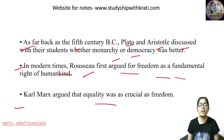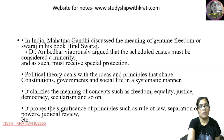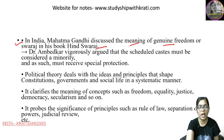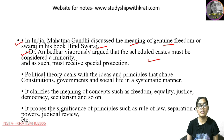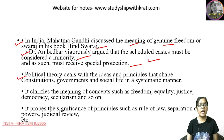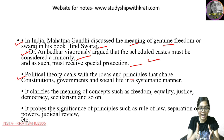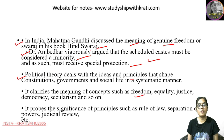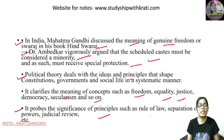Karl Marx argued that equality was as crucial as freedom. In India, Mahatma Gandhi discussed the meaning of genuine freedom and Swaraj in his book 'Hind Swaraj' — that Swaraj means being a leader of yourself. Dr. Ambedkar argued for scheduled castes, that they would be considered a minority and given special protection because of their history. In political theory, we talk about ideas and principles which have given our today's constitution, our government, and our social life a systematic manner. It clarifies the meanings of concepts like freedom, equality, justice, democracy, and secularism.